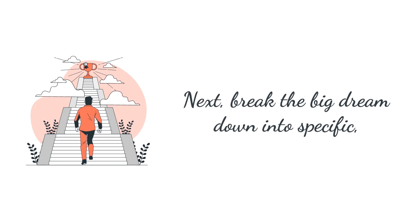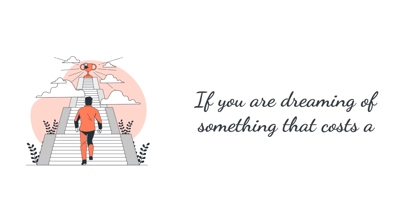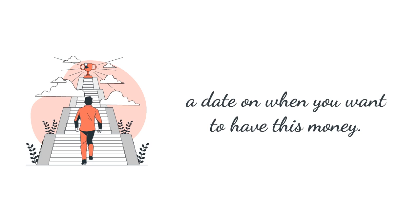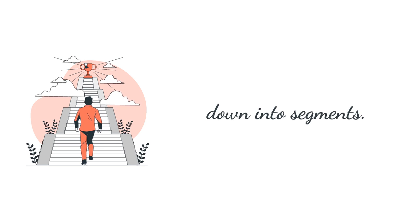This action is important because your subconscious will help enable you to reach your goals to achieve your dream. Next, break the big dream down into specific, measurable goals to get you there. If you are dreaming of something that costs a certain amount of money, like a car, you will set a date on when you want to have this money. Once you have your date, then break your timeline down into segments.